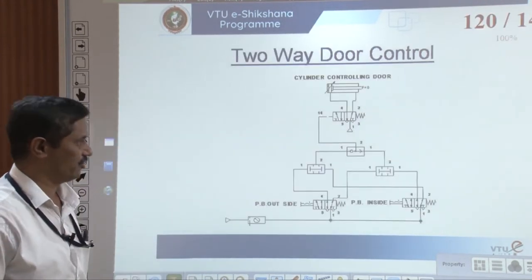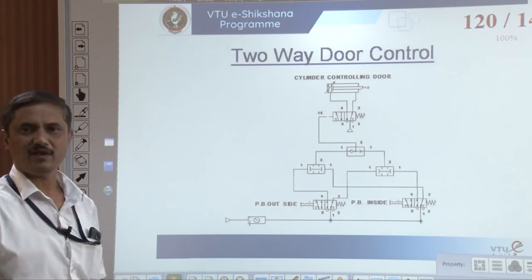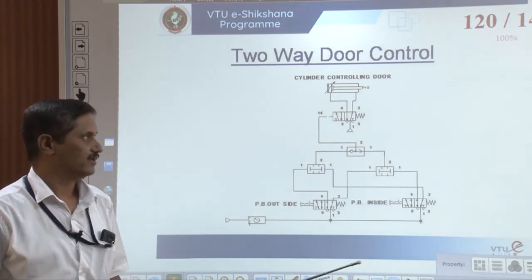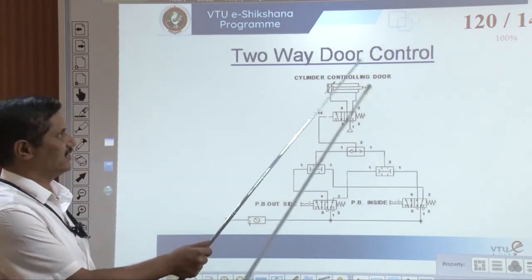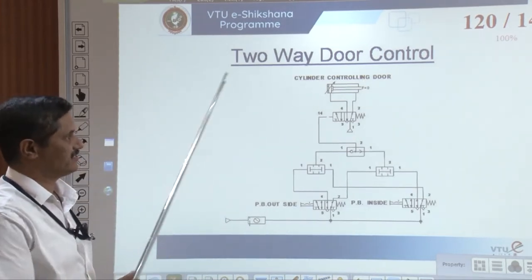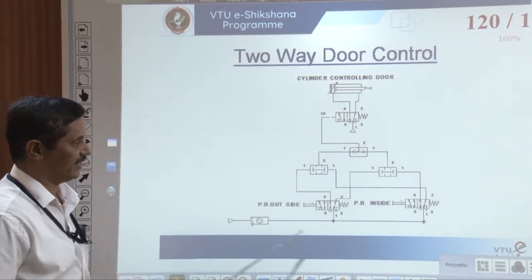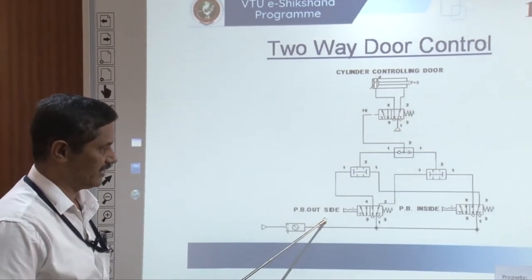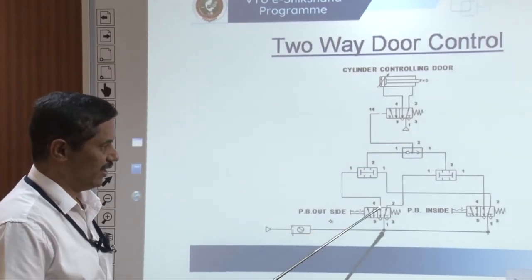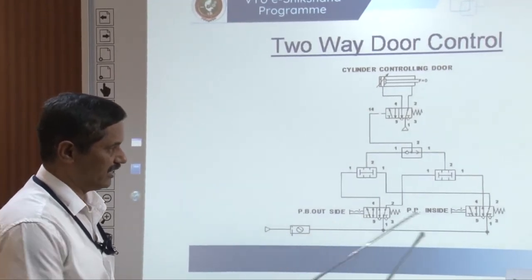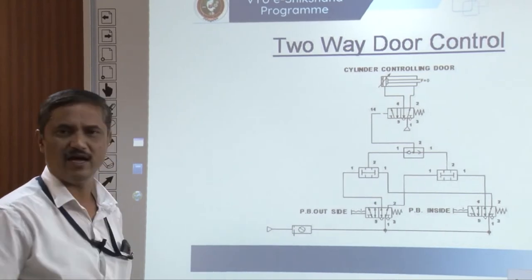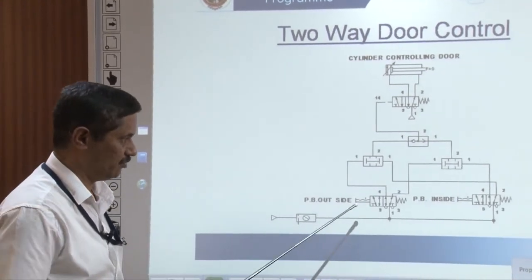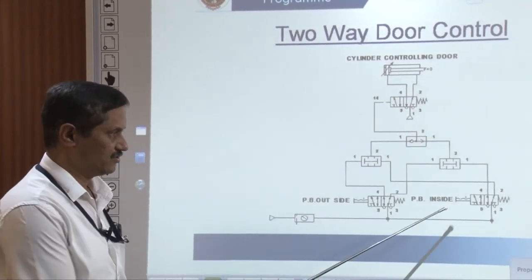Such a system has to be developed for an industry warehouse, and this can be done with pneumatics. You have to decide whether to use pneumatic, motors, or hydraulics — appropriate selection of the driving elements. The technology has to be thought through, then the design aspects applied. Now I will show you how this can be done. This is the circuit demonstrating that environment. You can have two push buttons: one on the outside and another on the inside which is a detent, holding type.